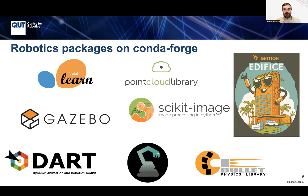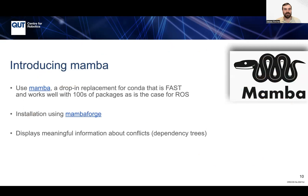The Python toolbox for robotics is also available, including the QUT Centre for Robotics tools. One of the cool things we introduced with RoboStack is Mamba. If you used Conda a while back, you would have noticed it's quite slow. Mamba is a drop-in replacement for Conda that's really fast and works well with hundreds of packages, as is the case for ROS. It was actually one of the main motivations for developing Mamba. You can install Mamba easily using Mambaforge. Another huge advantage is that Mamba displays really meaningful conflict resolution information, which in Conda can take you a long time.